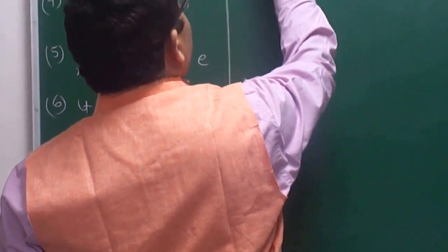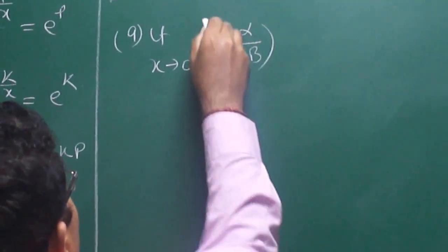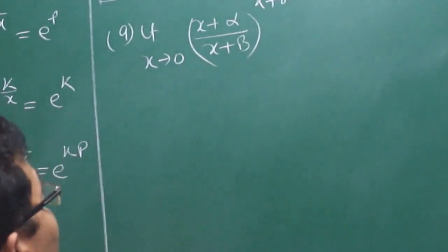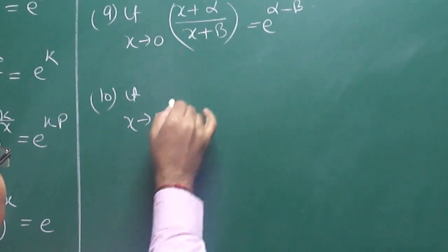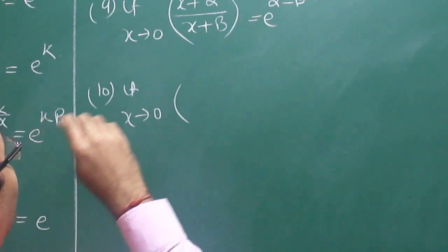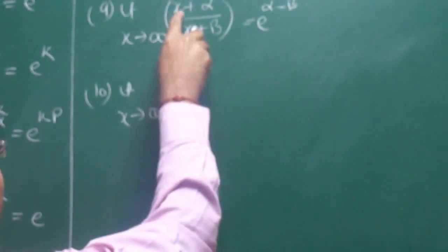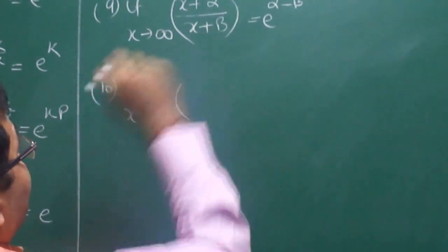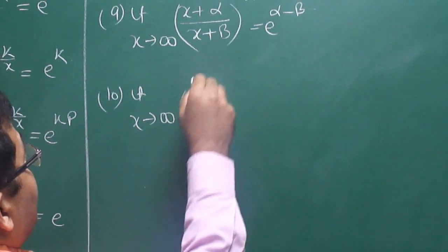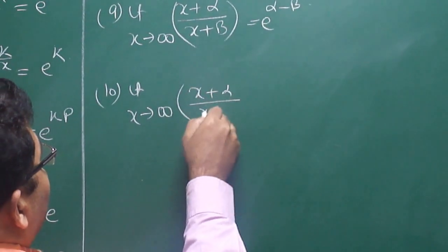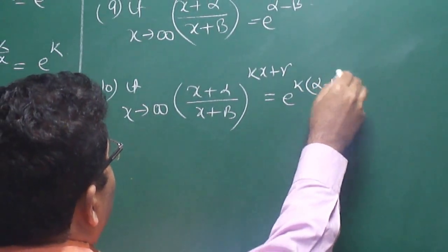You can also note some more formulas. Limit x tends to infinity, x plus alpha upon x plus beta, whole to the power x plus gamma — this becomes e to the power alpha minus beta. Similarly, limit x tends to infinity, x plus alpha upon x plus beta, whole to the power kx plus gamma — this becomes e to the power k times alpha minus beta. These are important patterns to keep in mind.